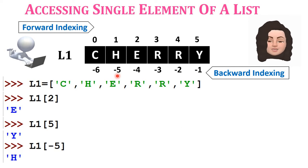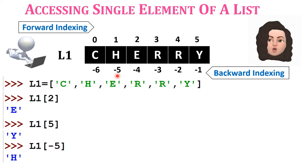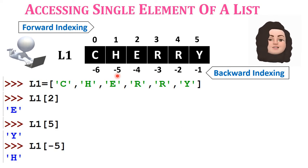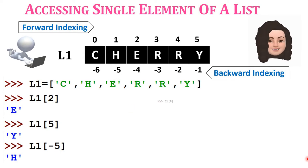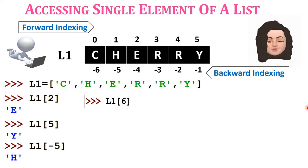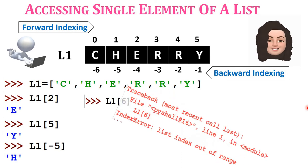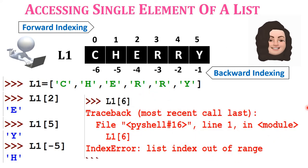If you try to access an element using an index that is not present in the list — for example L1[6], where index 6 does not exist — Python will raise an error stating 'list index out of range'.